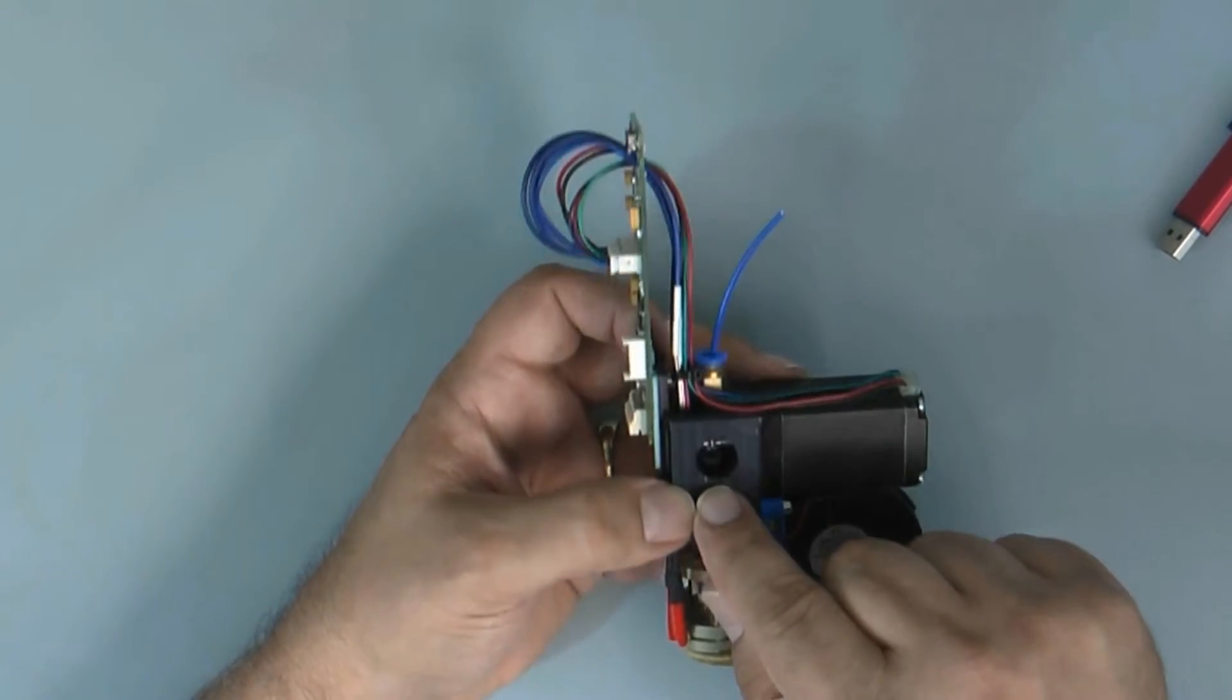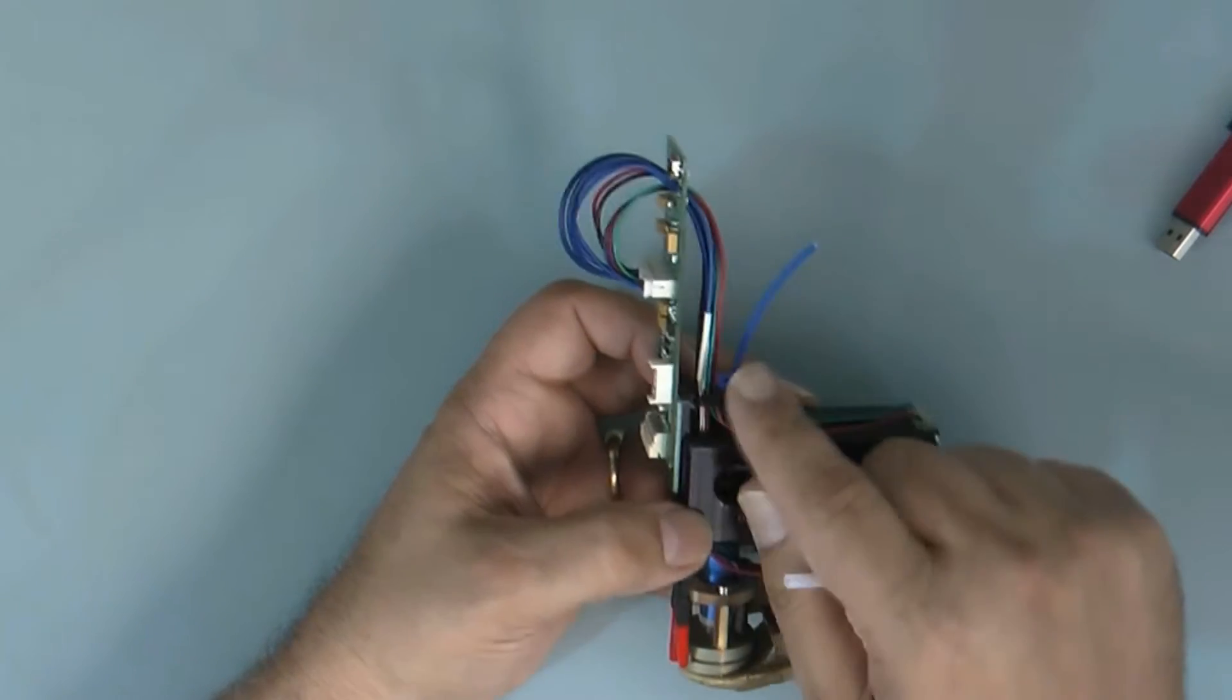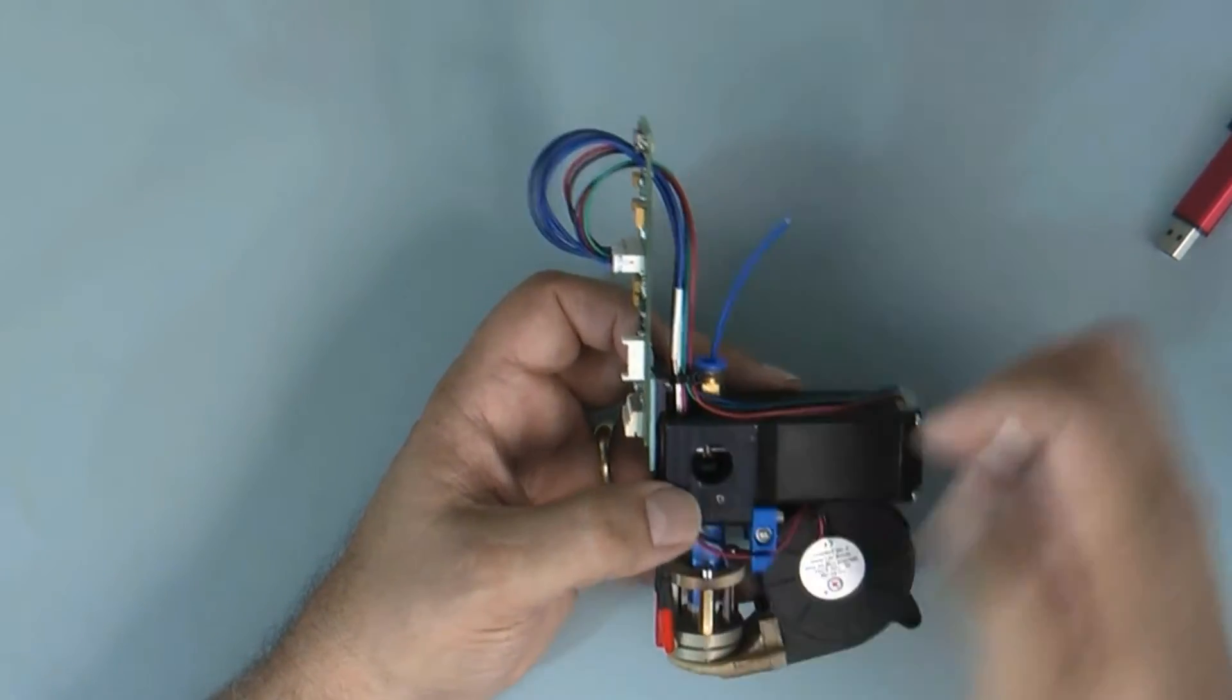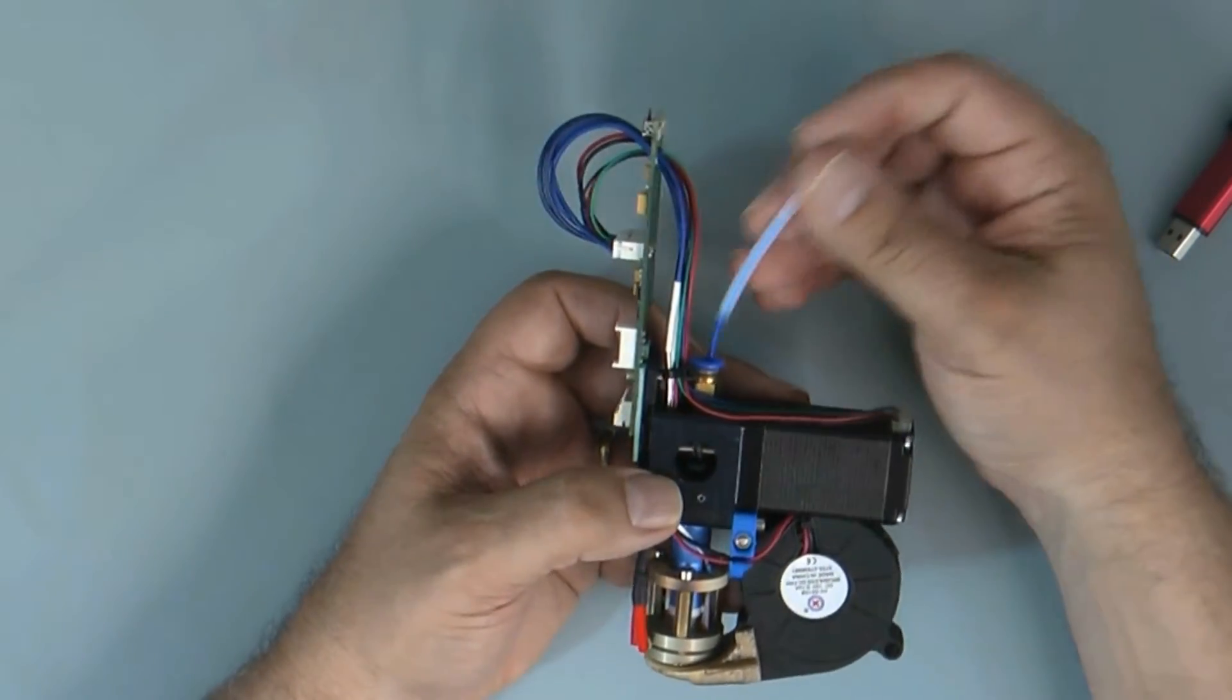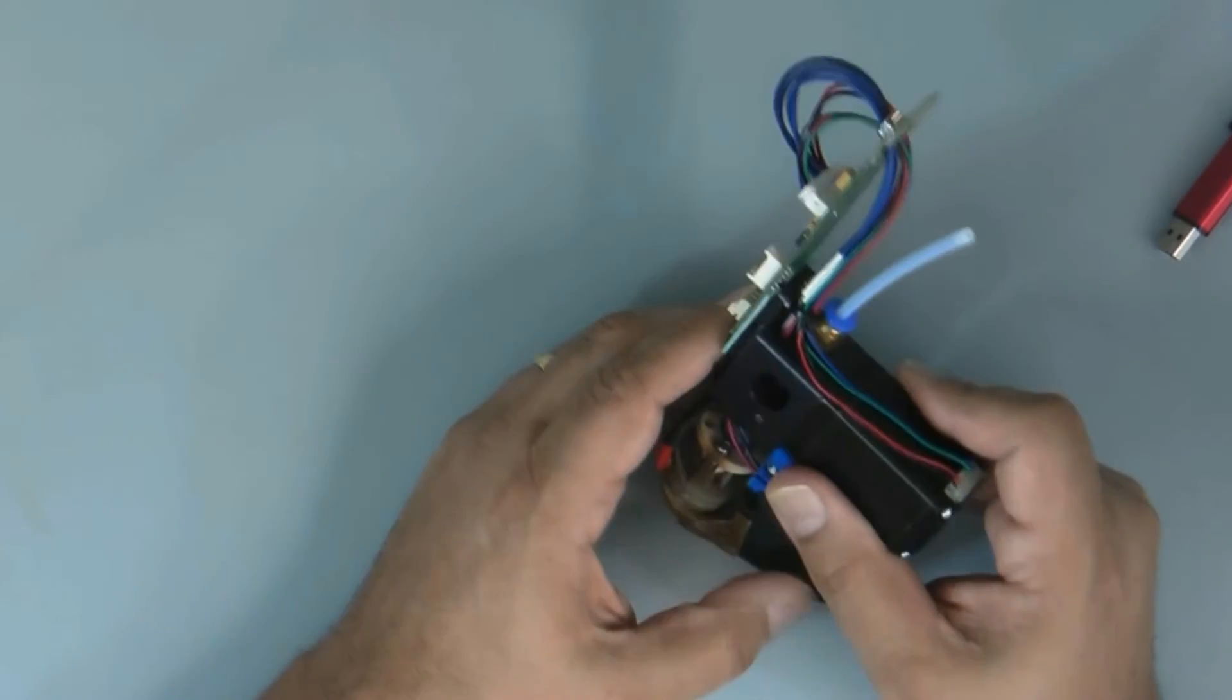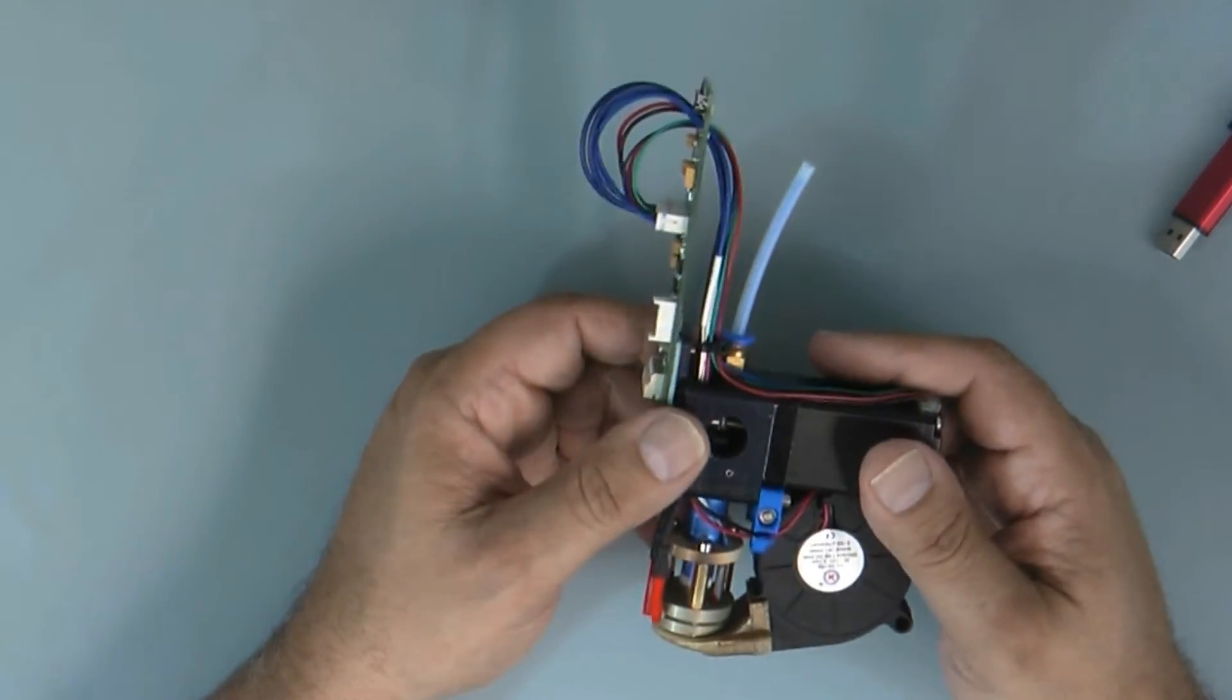Once it's been grabbed by the motor and is underneath that white collar, inside that white tube, you'll just reseat the guide tube by pushing it in place and then go back to your software and advance it with the software.